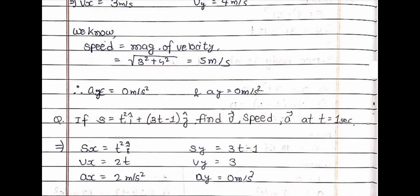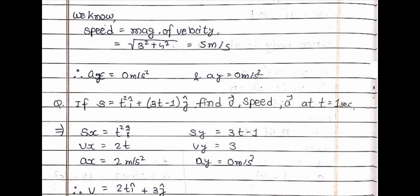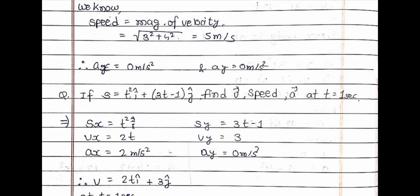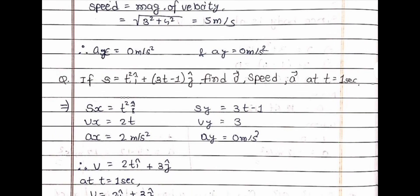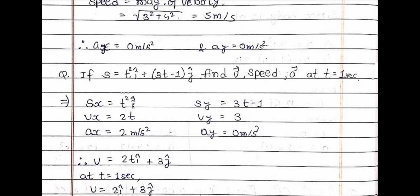Now the second question: if s = t² î + (3t − 1) ĵ, find velocity, speed, and acceleration at t = 1 second. It is again a simple question. If you have seen the videos, you can easily solve it. Here are the answers.